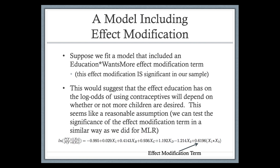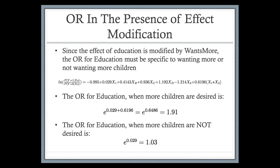If we fit a model that included this effect modification term — allowing the effect of education to change depending on whether or not they wanted more children — that would involve including another term in the model: education times 'wanting more.' We're not going to work with these formulas by hand, so focus on the concepts. This can be tested statistically to check whether the effect modification is statistically significant, and you want it to also make conceptual sense.